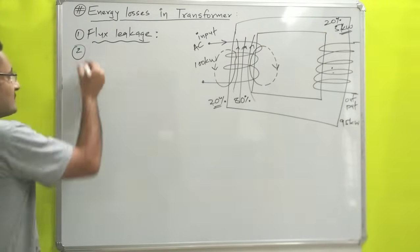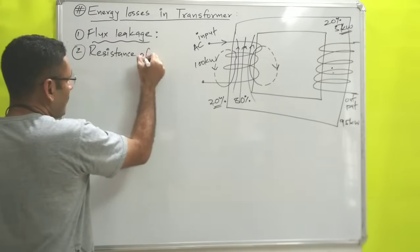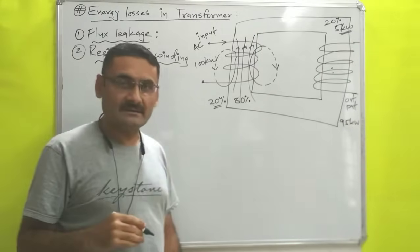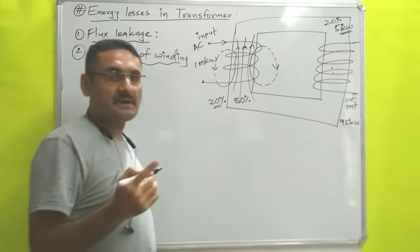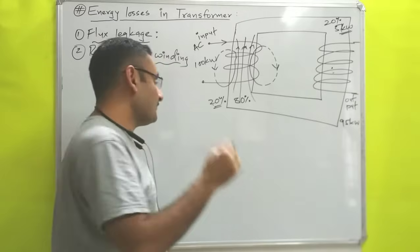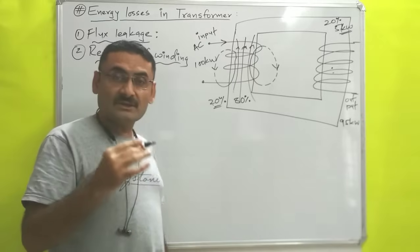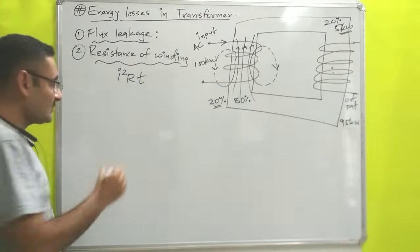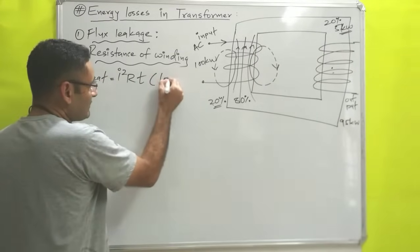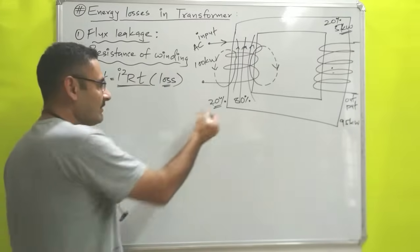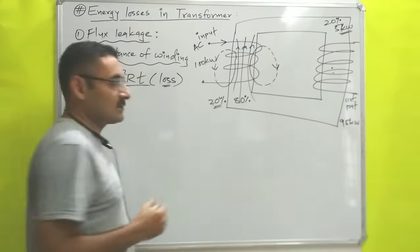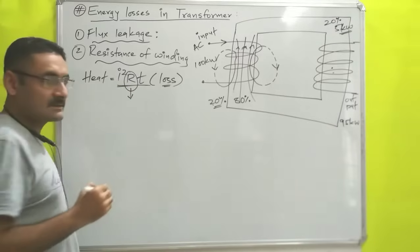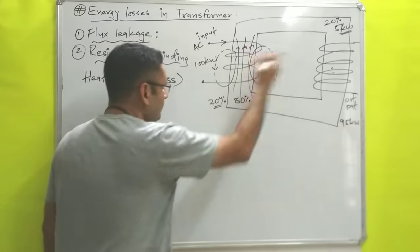Now we will move to the next energy loss, which is loss due to the resistance of winding. The primary and secondary windings are made with copper, and copper has some resistance. If you supply current through the copper wire, energy is lost in the form of heat according to I²RT. So that much energy is lost in terms of heat, and that is loss of energy — say 20% energy is lost — so 100% power or energy you cannot transmit.